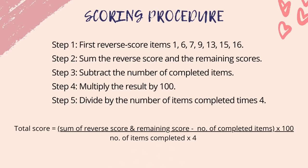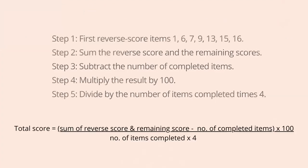Step 2: Sum the reverse scores and the remaining scores. Step 3: Subtract the number of completed items. Step 4: Multiply the result by 100. Step 5: Divide by the number of items completed multiplied by 4.